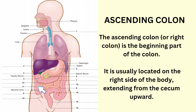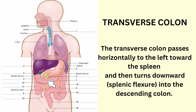Ascending colon. The ascending colon, or the right colon, is the beginning part of the colon. It is usually located on the right side of the body, extending from the cecum upward. Transverse colon. The transverse colon passes horizontally to the left toward the spleen and then turns downwards into the descending colon.